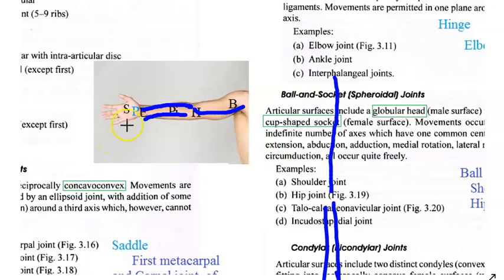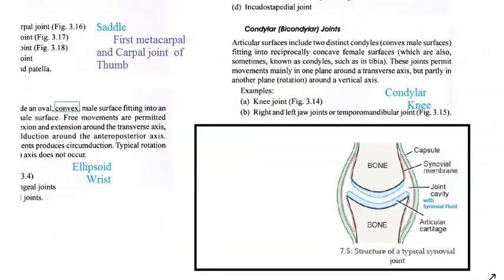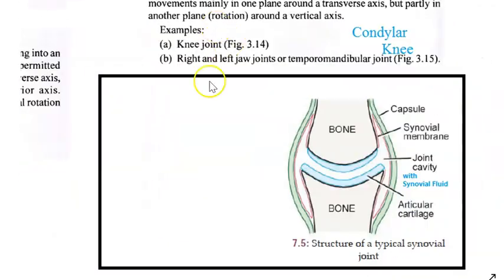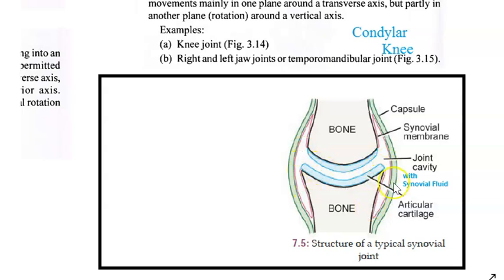And here you have the metacarpals; there in the foot you have the metatarsals. If you draw this diagram below, you will get some marks. You will see bone and bone, in between those two you have articular cartilages. Then you have a joint cavity with the synovial fluid, then you have a synovial membrane completely surrounding inside this joint space, and then you have a capsule.